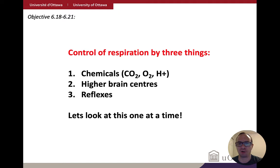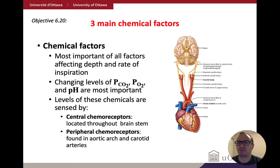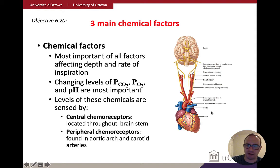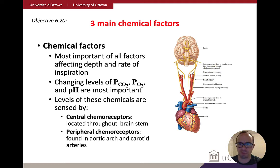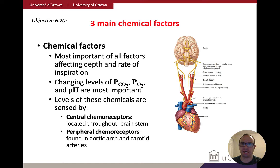Chemical factors are really the most important in determining the rate and depth of respiration. Changing levels of CO2, oxygen, and pH are the most important — and of those, carbon dioxide is probably the most important. You have chemoreceptors that sense chemicals. You have central chemoreceptors located throughout the brainstem, and peripheral chemoreceptors in the aortic arch and carotid arteries — the same structures mentioned in regulation of heart rate and blood pressure.